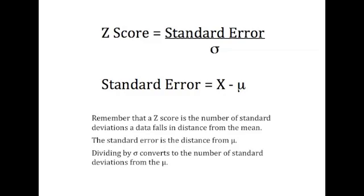Before you panic over this formula, let me explain it to you. The Z-score is equal to the standard error divided by the standard deviation. The standard error is a term you need to come to understand, generally represented by the letters SE, which is X minus mu.